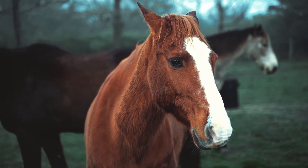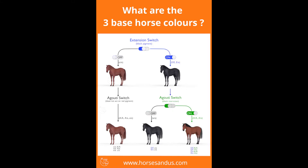To recap: a horse with two capital E alleles or only one capital E will be black, as the capital E is dominant over the lowercase e that codes for red. A red horse will have two lowercase Es because there is no dominant allele to mask the recessive one. The agouti gene only modifies black fur into a reddish-brown color but keeps the mane and tail black. So a bay horse will have two capital Es or one capital E, with either two capital As or one capital A. For a horse to stay black, it must have two lowercase As. A red horse will stay chestnut no matter what agouti gene they get — they must have two lowercase Es, but they can have any combination of the A alleles; it doesn't matter.